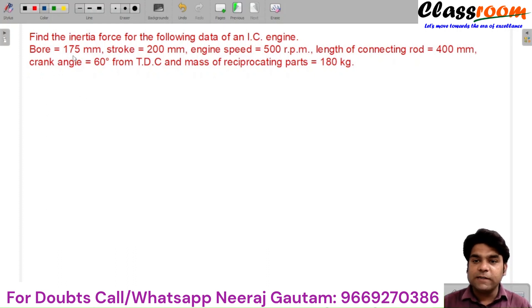Find the inertia force for the following data of an IC engine. The diameter of bore is 175 mm. The length of the stroke is 200 mm. The engine speed is 500 rpm. The length of connecting rod is 400 mm. The crank angle is 60 degrees from TDC and the mass of the reciprocating parts is 180 kg.